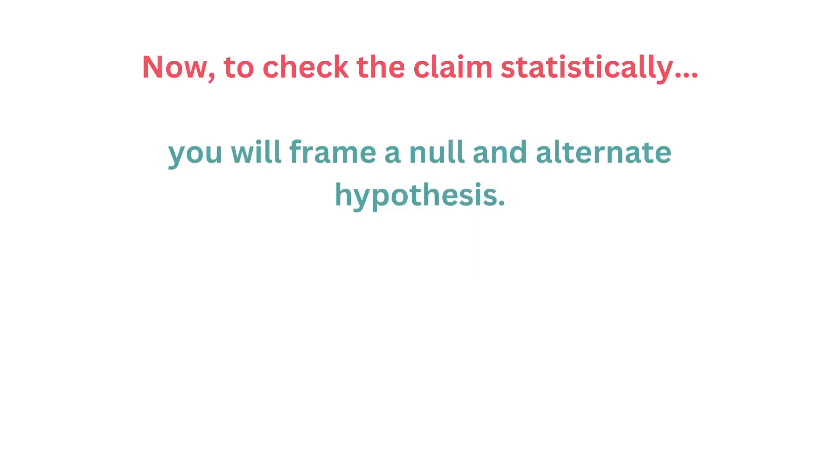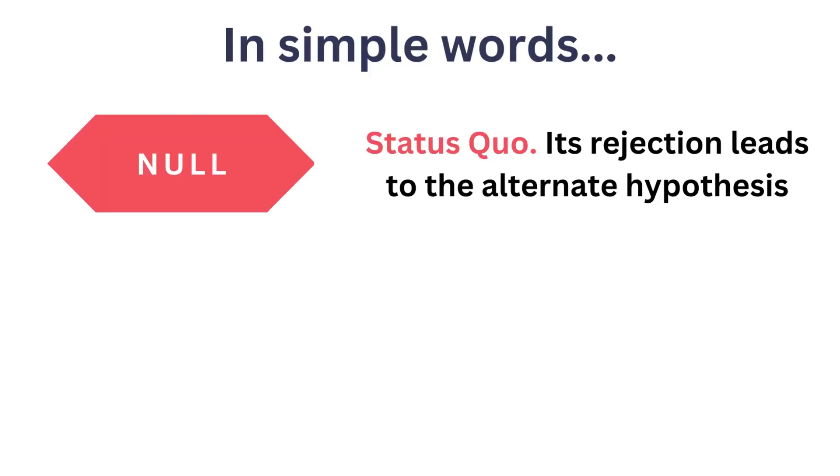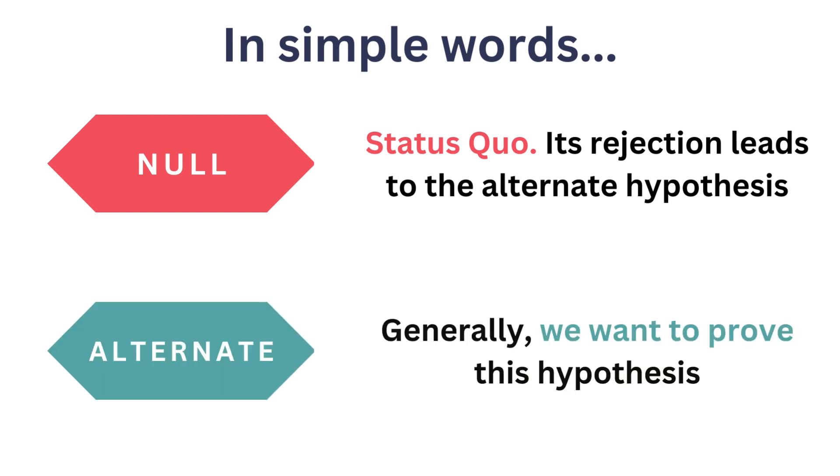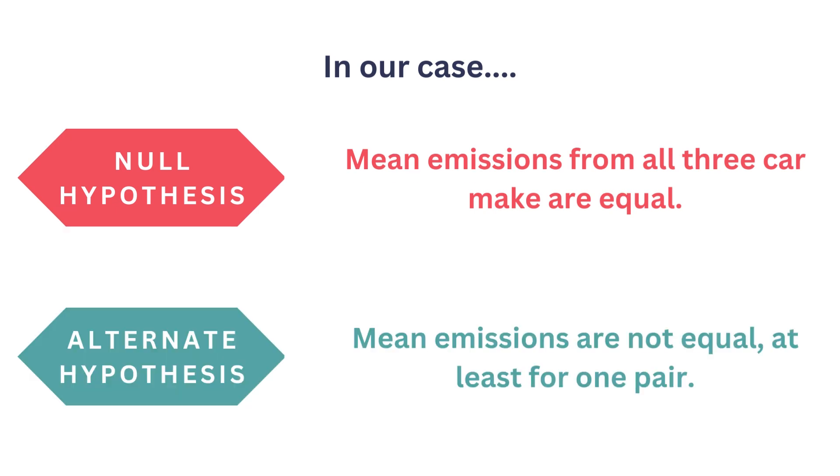Now to check the claim statistically, you will frame a null and alternate hypothesis. Now what's null and alternate hypothesis? In simple words, null is a status quo - its rejection leads to the alternate hypothesis, while alternate hypothesis is what we want to prove. In our case, the null hypothesis is that mean emissions from all three car makes are equal, while the alternate hypothesis is that for at least one pair, mean emissions are not equal.